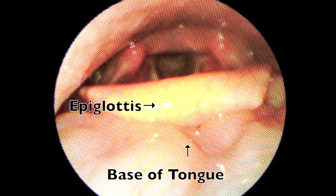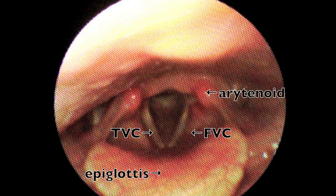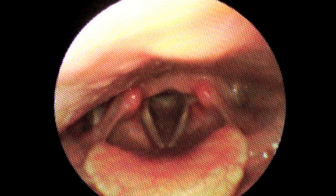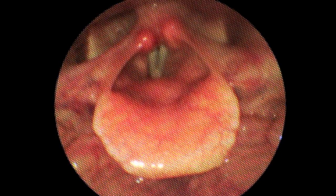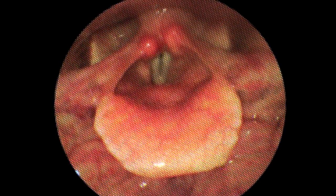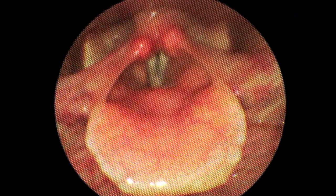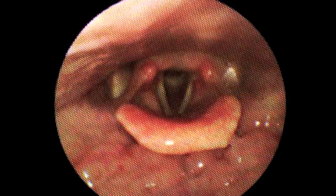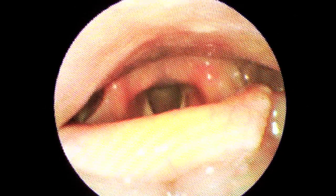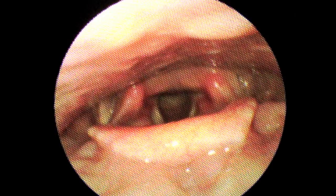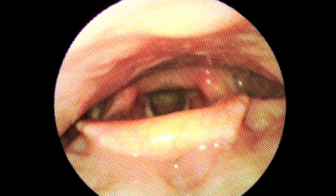As we continue to insert the endoscope, we will be able to closely assess the anatomy, observing the posterior pharyngeal wall, the piriform sinuses, the arytenoids, the inter-arytenoid space, the aryepiglottic folds, and the true and false vocal cords.